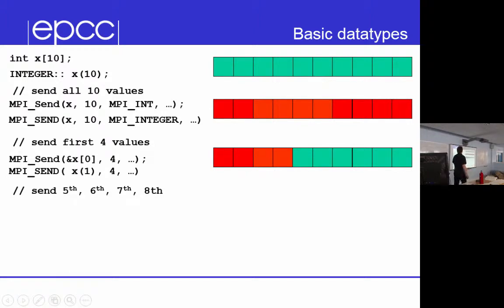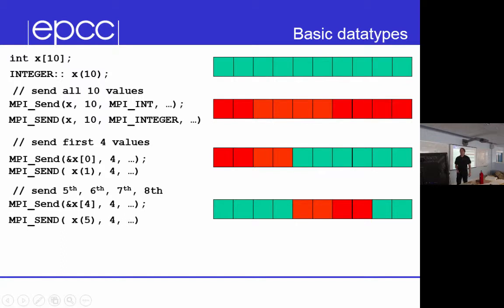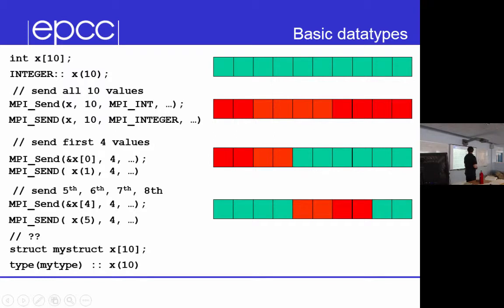All MPI actually gets is a pointer. So here you're sending 10 values starting from here, or 4 values starting from here. If you want to send 5, 6, 7 and 8, you say send 4 values starting from here — you just pass that location. What it really means is the address of x[4], which is x plus 4. In Fortran you just pass x(5). So that's obvious, but what happens if I want to send an array of 10 structures?